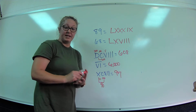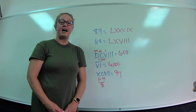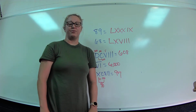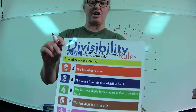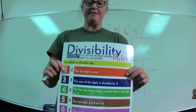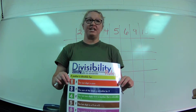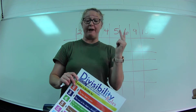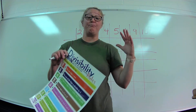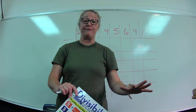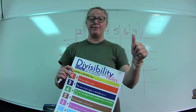Now we're going to talk about divisibility rules. That word is a little hard to say sometimes, but 'divisibility' simply means divide. I have a nice poster to show you. Let's start with the rule for 2: if a number is divisible by 2, it has to be an even number. An even number is anything that ends in 0, 2, 4, 6, or 8. All even numbers are divisible by 2.